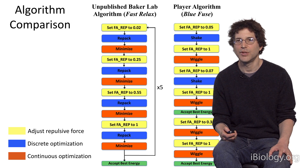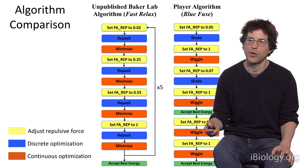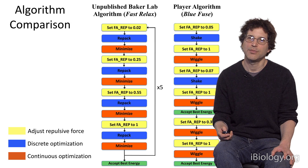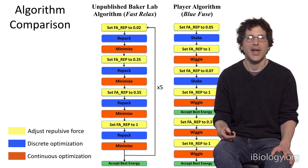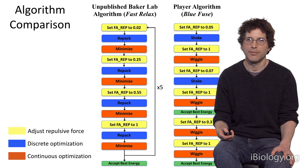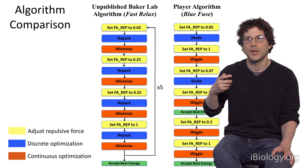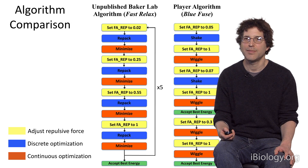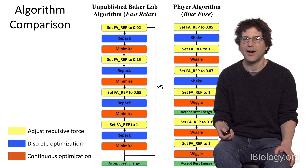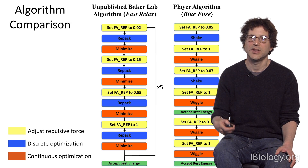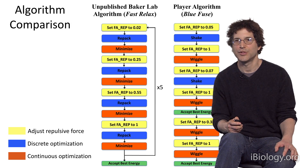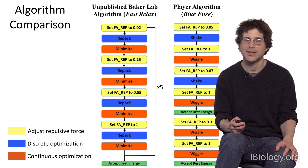We were really stunned to find that the BlueFuse algorithm, which was taking over the population, was very similar to an algorithm we had been developing in the lab for protein structure prediction. The colors — yellow, blue, and red — represent different operations. The algorithm we developed in the lab cycles between yellow, blue, and red repeatedly, which we had never tried before and found worked really well. The BlueFuse algorithm developed by players was very similar, alternating between these different operations. It was sobering to find that in the context of the game, BlueFuse was actually better than what we had developed as professional scientists in the lab.